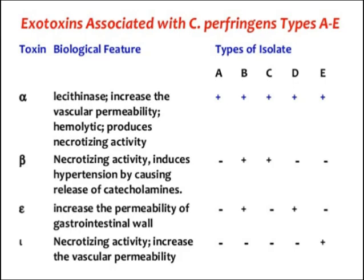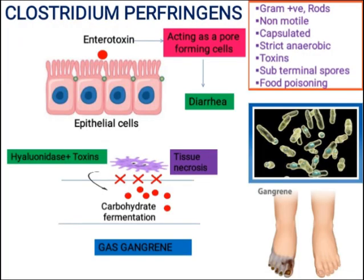So here we discussed the main characteristics of Clostridium perfringens — how it causes pathogenicity, how it causes gas gangrene, and what types of toxins are present in its different types (A, B, C, D, E) and what their effects are.